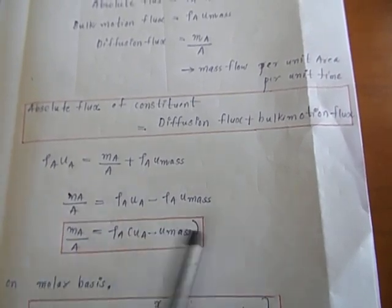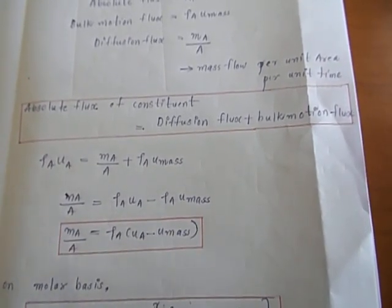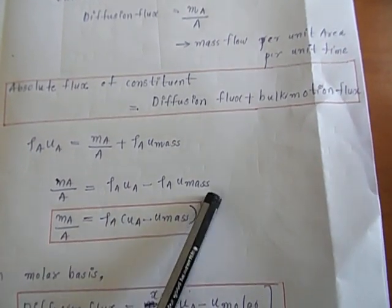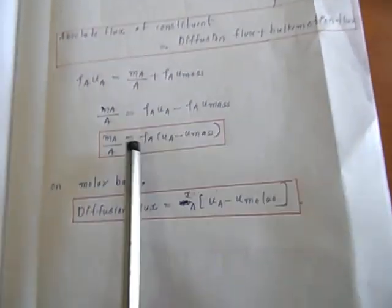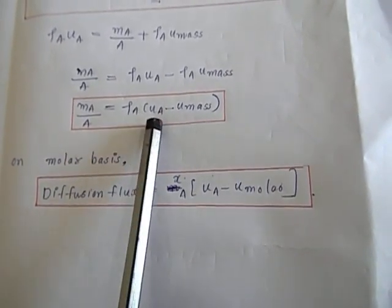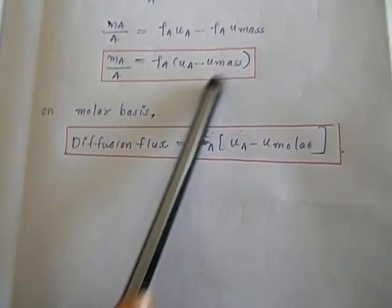We can interchange the left-hand side and right-hand side. Then M_A by A is equal to rho_A U_A minus rho_A U_mass. Taking out rho_A, M_A by A is equal to rho_A into (U_A minus U_mass) in terms of mass fraction.